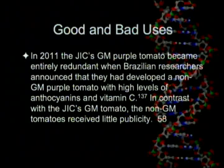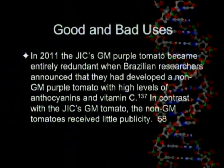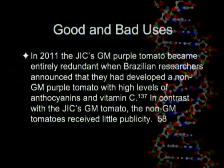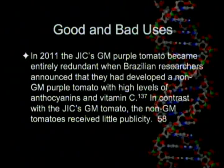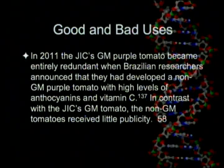One critic suggested golden rice's real value lies as a public relations strategy to boost the biotechnology industry's tarnished image — that it seemed less like a solution to vitamin A deficiency than to the industry's PR problem. In 2011, the GM purple tomato became entirely redundant when Brazilian researchers announced a non-GM purple tomato with high levels of anthocyanins and vitamin C, developed through conventional plant breeding. In contrast with the GM tomatoes, the non-GM tomatoes received little publicity.